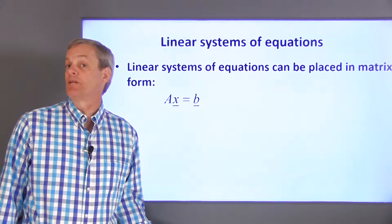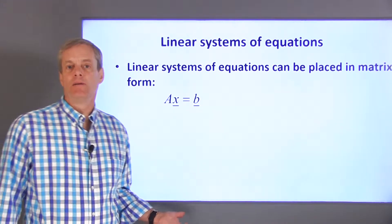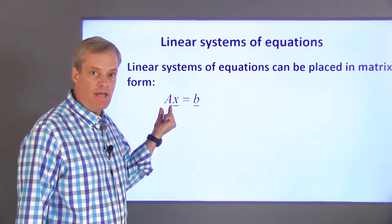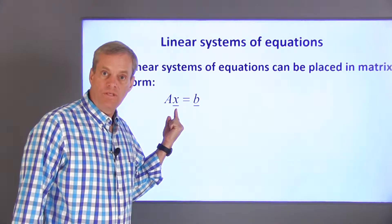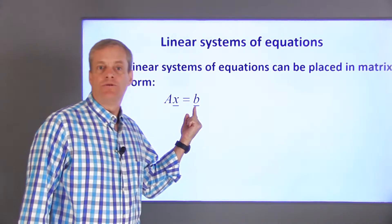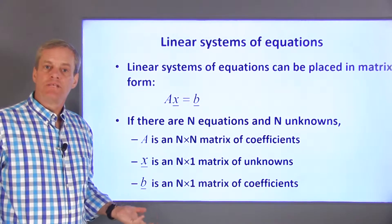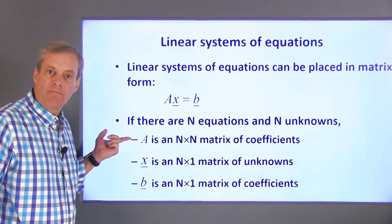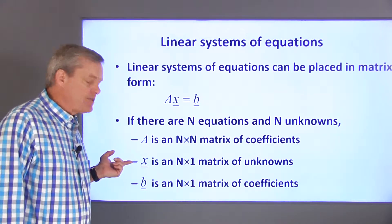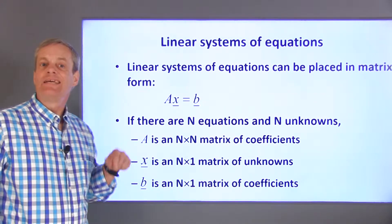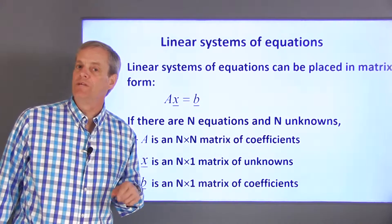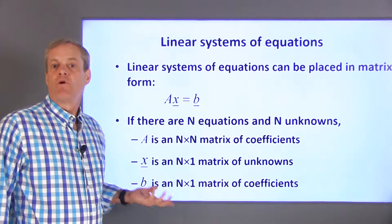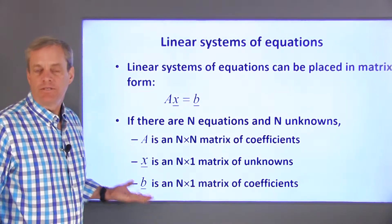Linear systems of equations can be placed in matrix form. If we have the same number of equations as unknowns, the matrix form of the equations is a square matrix A times a vector of unknowns, x, is equal to a vector B. If the system of equations has n unknowns and n equations, A will be an n by n matrix of numbers. X will be a column vector with n rows containing a list of the unknowns that we need to determine values for. B is also a column vector with n rows containing numbers.